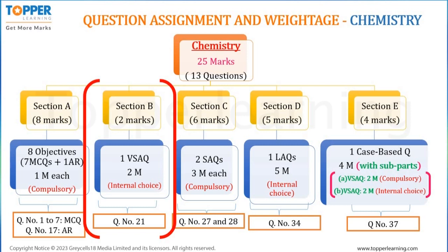In Section B, 2 marks are allotted to chemistry. There will be 2 chemistry questions, out of which you need to answer any one. Question number 21 will be the chemistry question of 2 marks with internal choice.